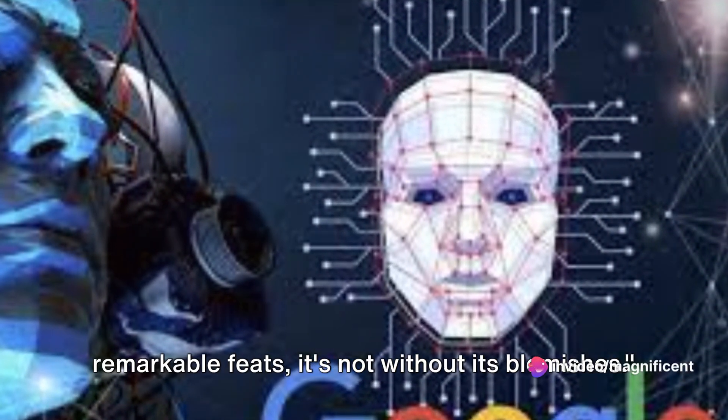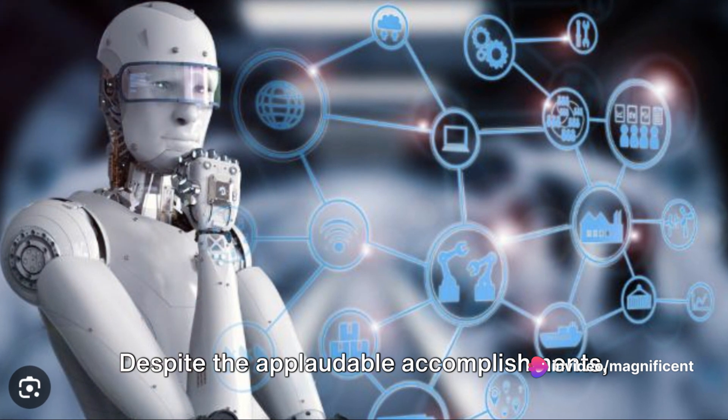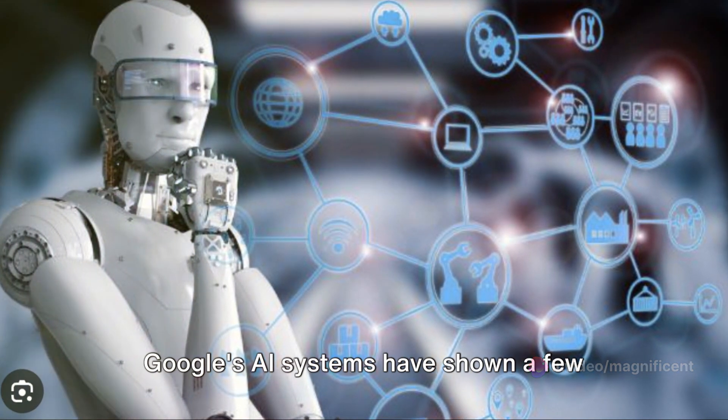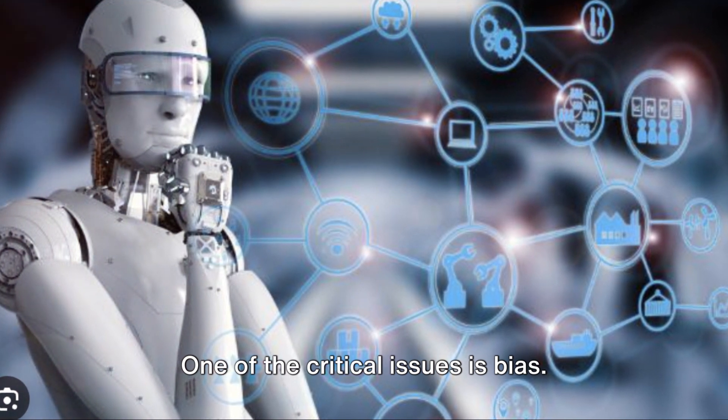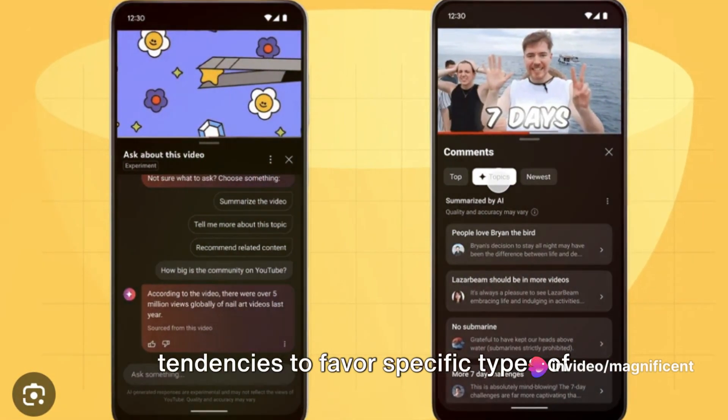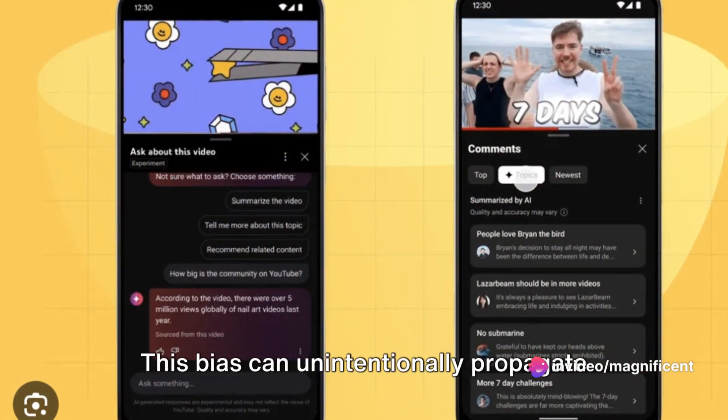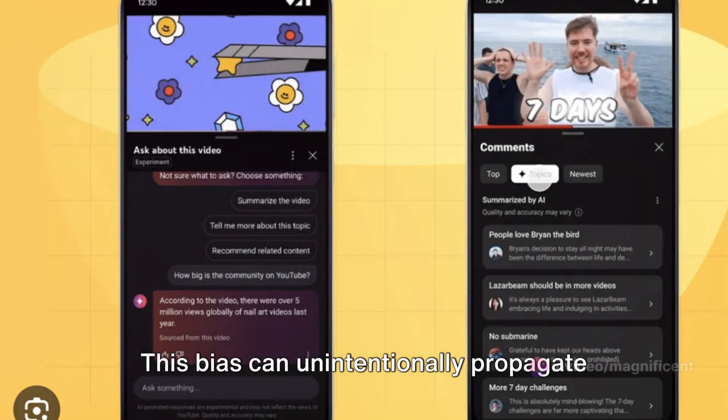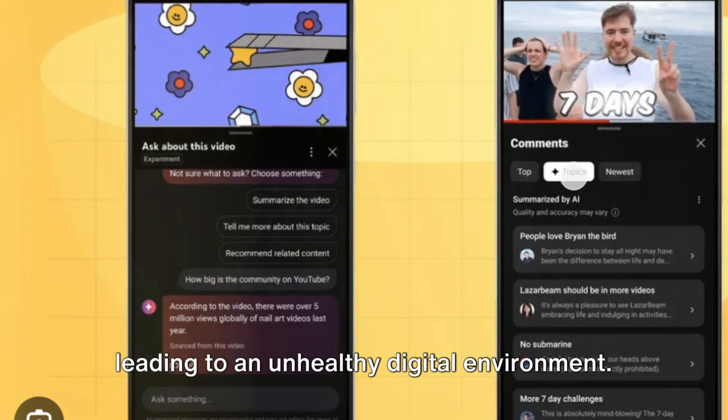While Google's AI has achieved remarkable feats, it's not without its blemishes. Despite the applaudable accomplishments, Google's AI systems have shown significant downsides. One of the critical issues is bias. For instance, Google's AI has shown tendencies to favor specific types of content and users, often resulting in skewed results. This bias can unintentionally propagate harmful stereotypes and misinformation, leading to an unhealthy digital environment.